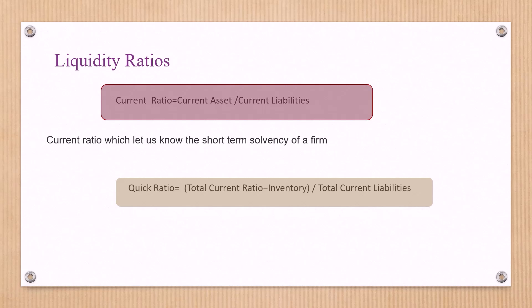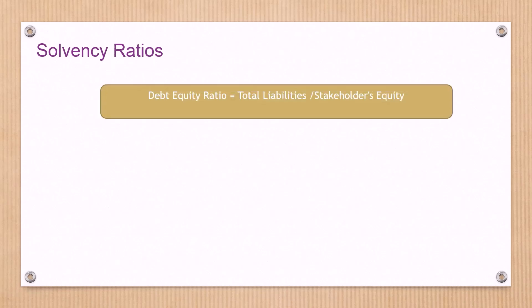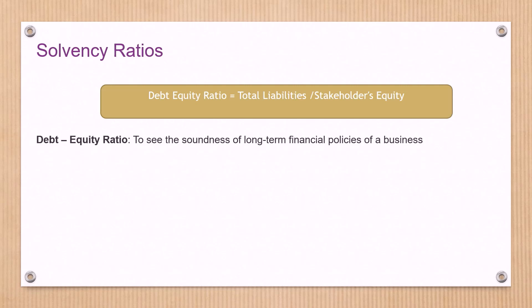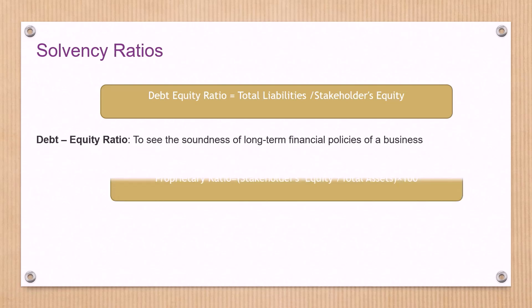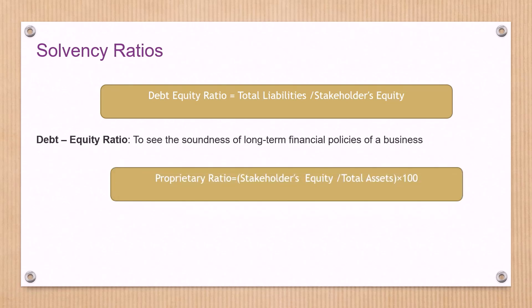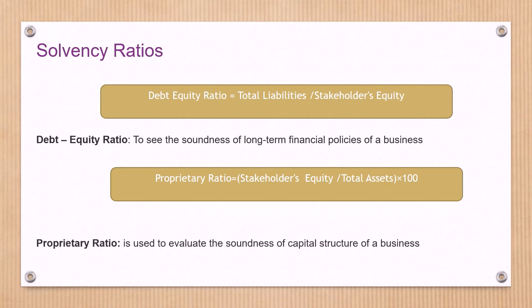The quick ratio formula helps the business know the short-term solvency of the firm. Under the solvency ratio, there is the debt-equity ratio. The formula is total liabilities divided by shareholder equity, which helps the business know the long-term financial policies of any business. The next formula under solvency ratio is the proprietary ratio: shareholders equity divided by total assets multiplied by 100. This formula helps to know the business soundness regarding capital structure.